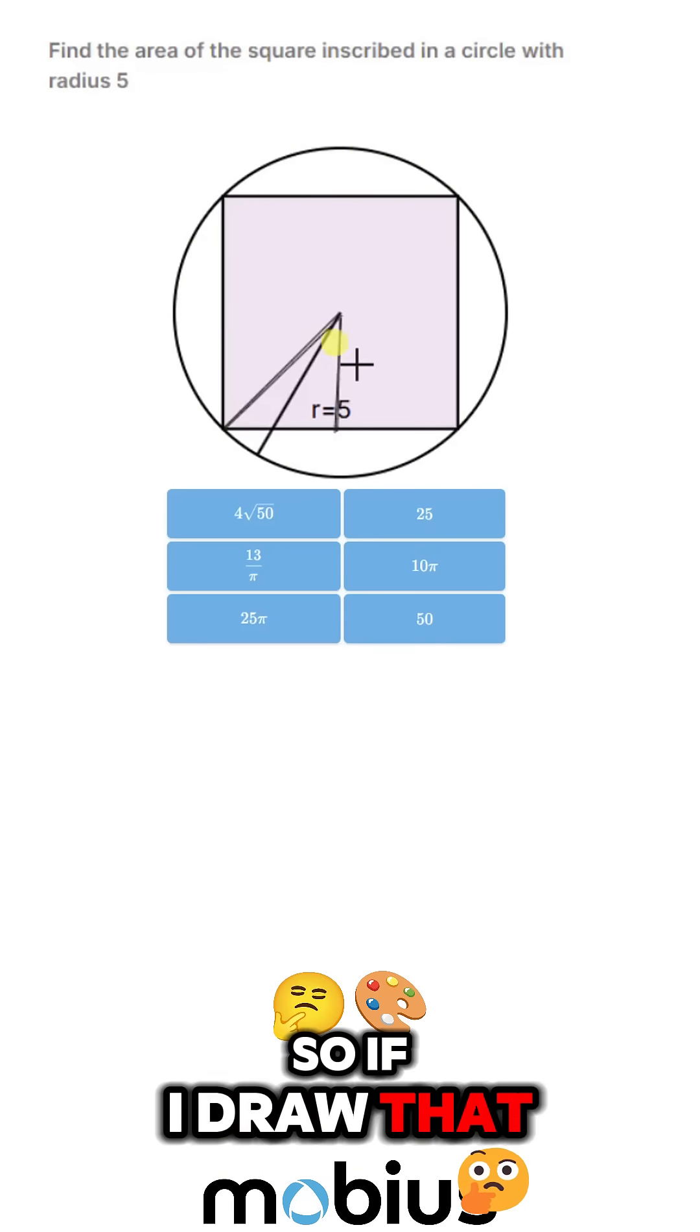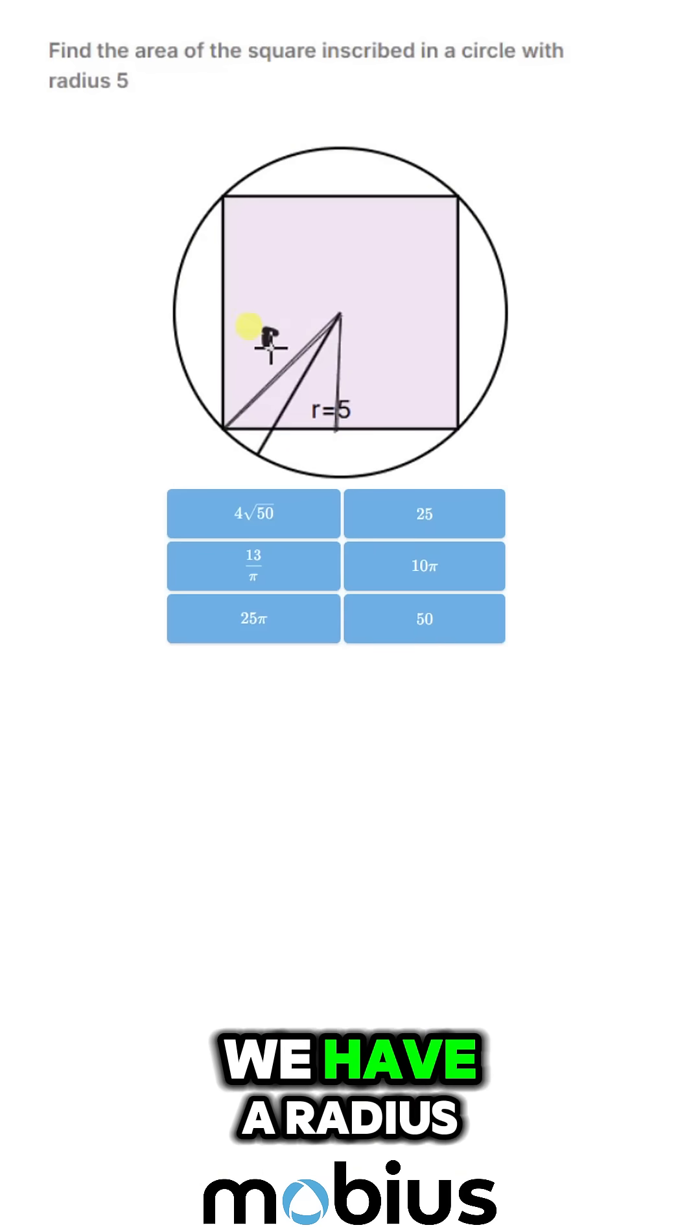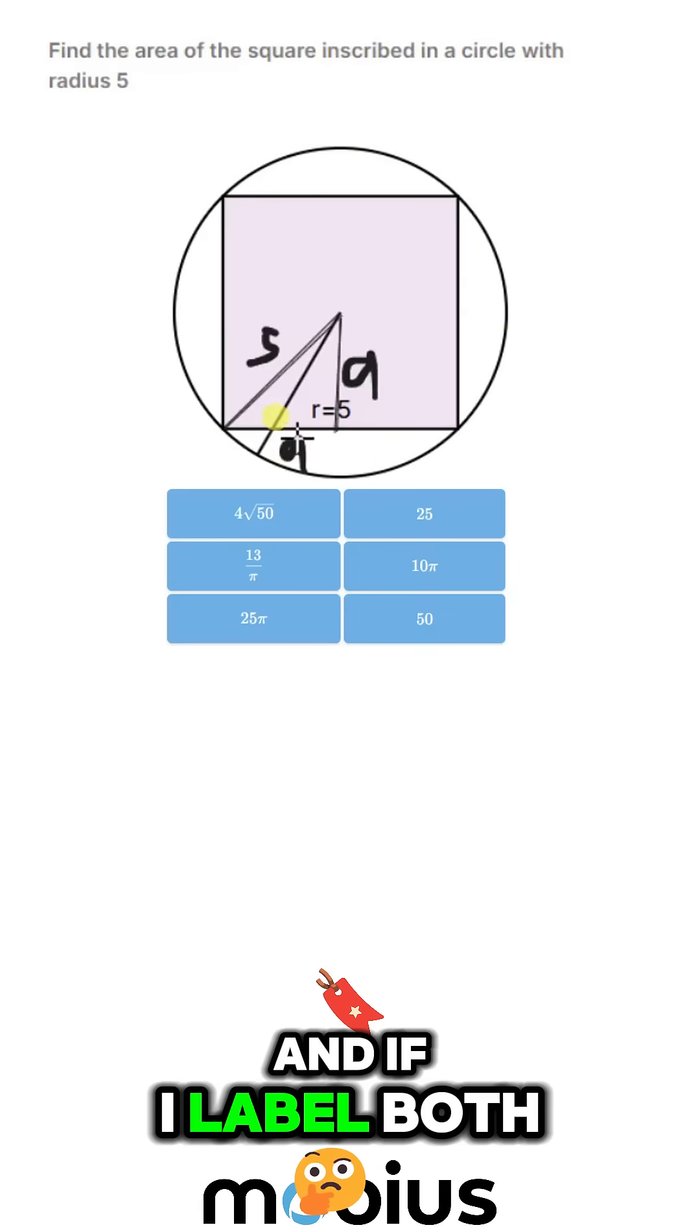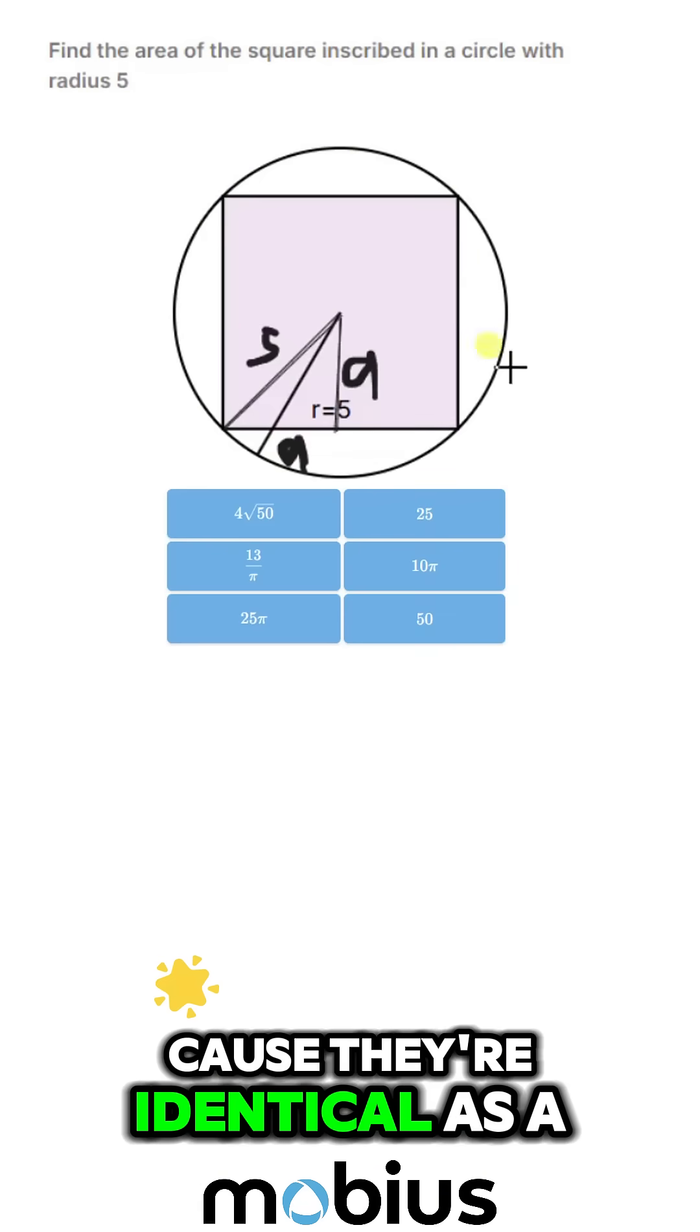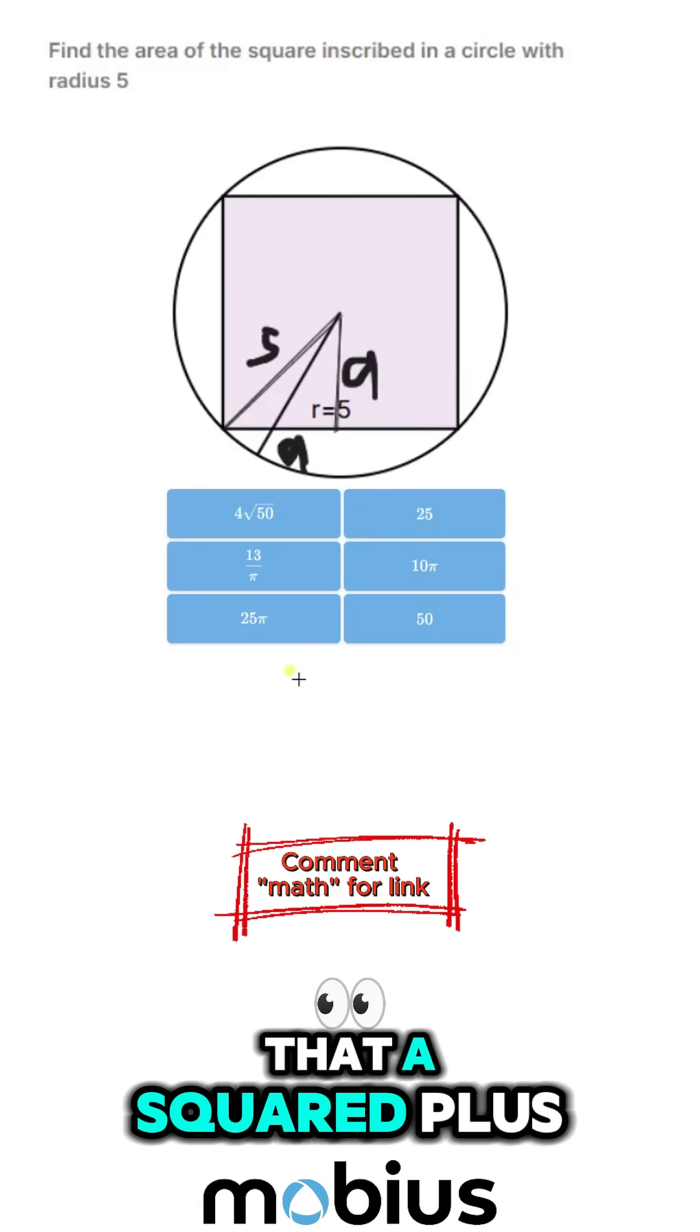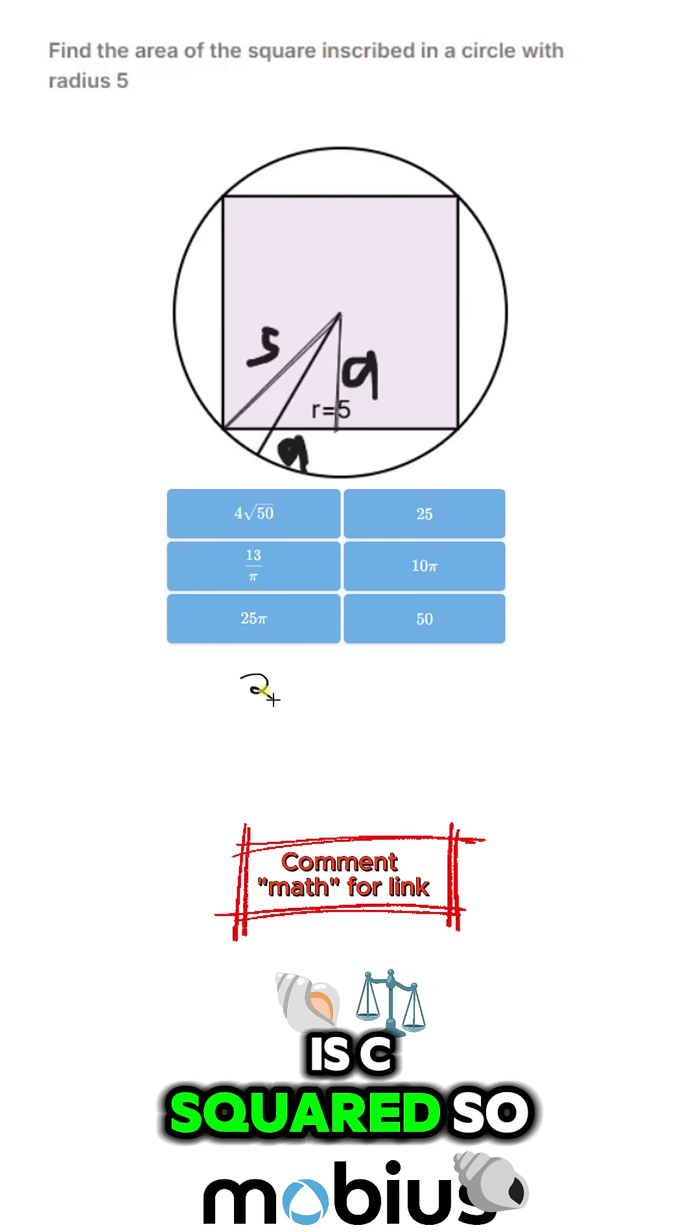So if I draw that in there, we have a radius or hypotenuse of 5. If I label both these sides as A because they're identical, then we can see that A squared plus B squared is C squared.